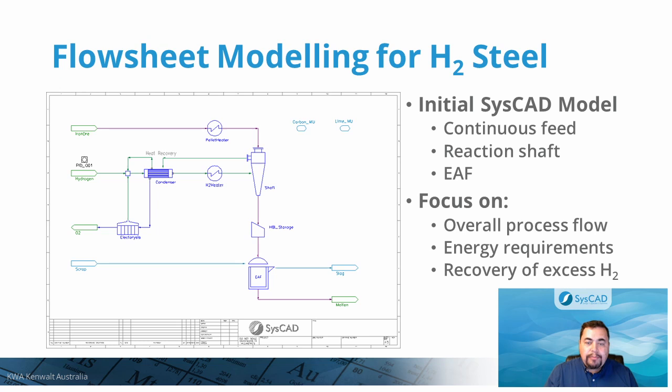A typical process involves continuous feed of pelletized ore to a reaction shaft with reduction to hot pellets, followed by smelting in an electric arc furnace. In practice, reagents such as slag formers are added to the electric arc furnace to remove impurities. More detailed modeling for the chemistry involved could be easily implemented. However, here we are focusing on the overall process flow and energy requirements, as well as recovering the large fraction of hydrogen remaining unreacted in the off-gas, essentially trying to remove water vapor, which would further impair the thermodynamic efficiency in the reaction shaft.